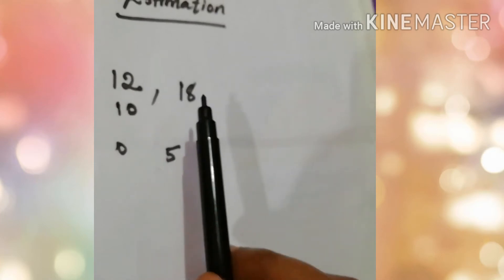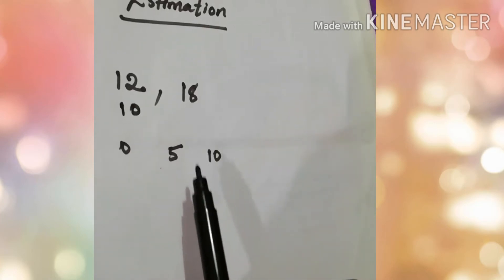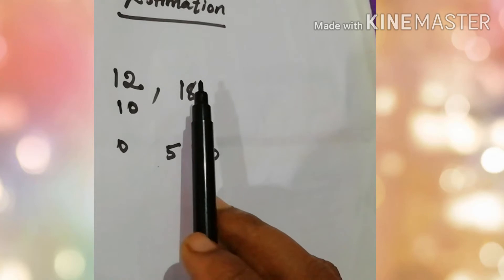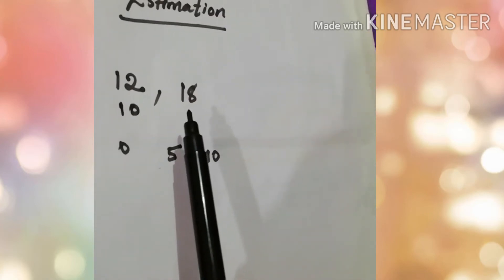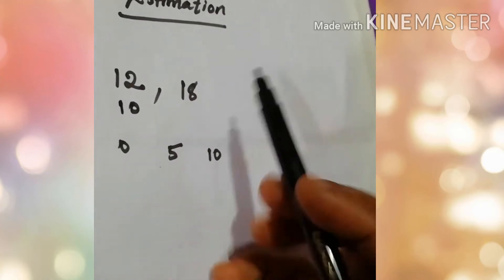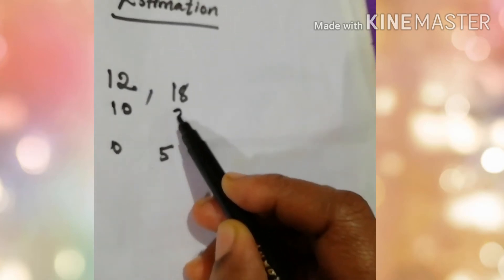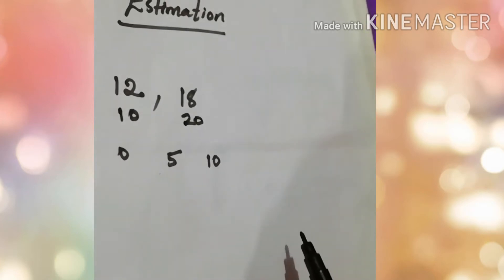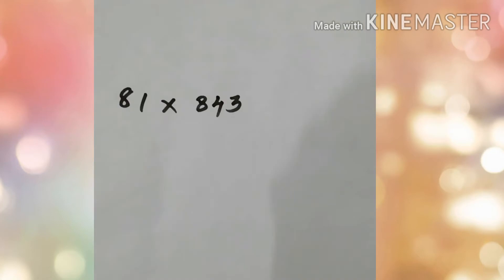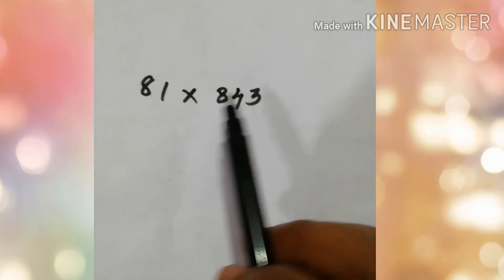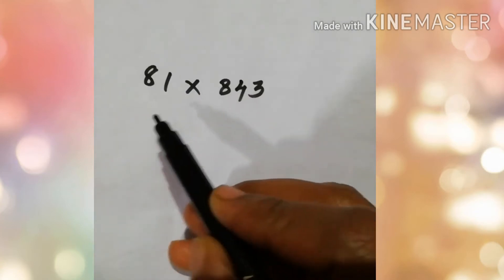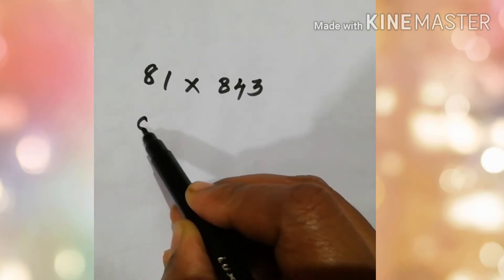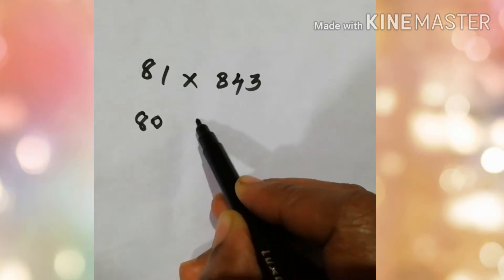If the number is bigger than five, we need to estimate it to the next value. Here it is 18, and this digit is 8. So we need to estimate it to 20. Now, how can we estimate this other number? Here the ones digit is 1, so we can estimate it to its nearest two-digit number, that is 80.